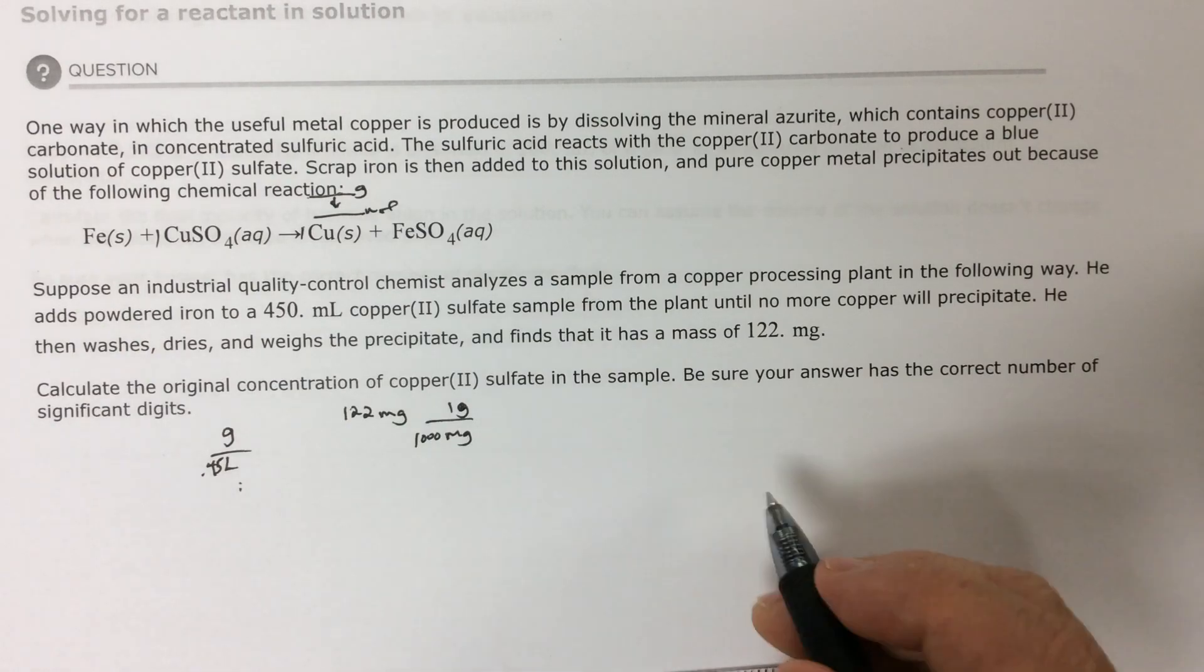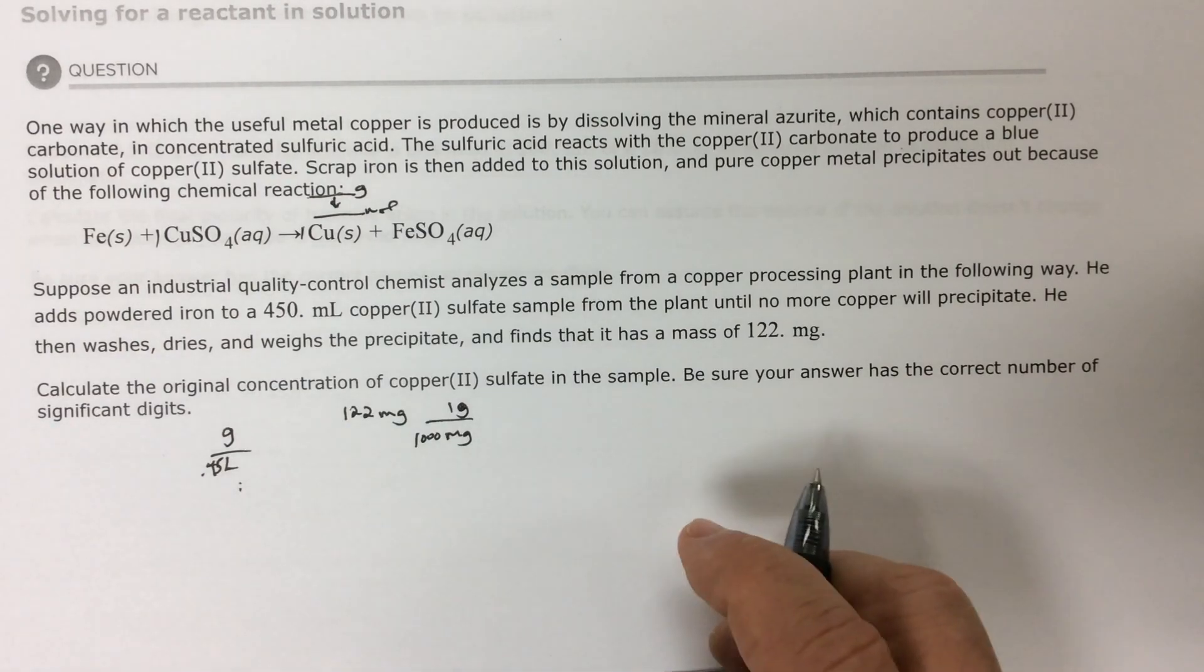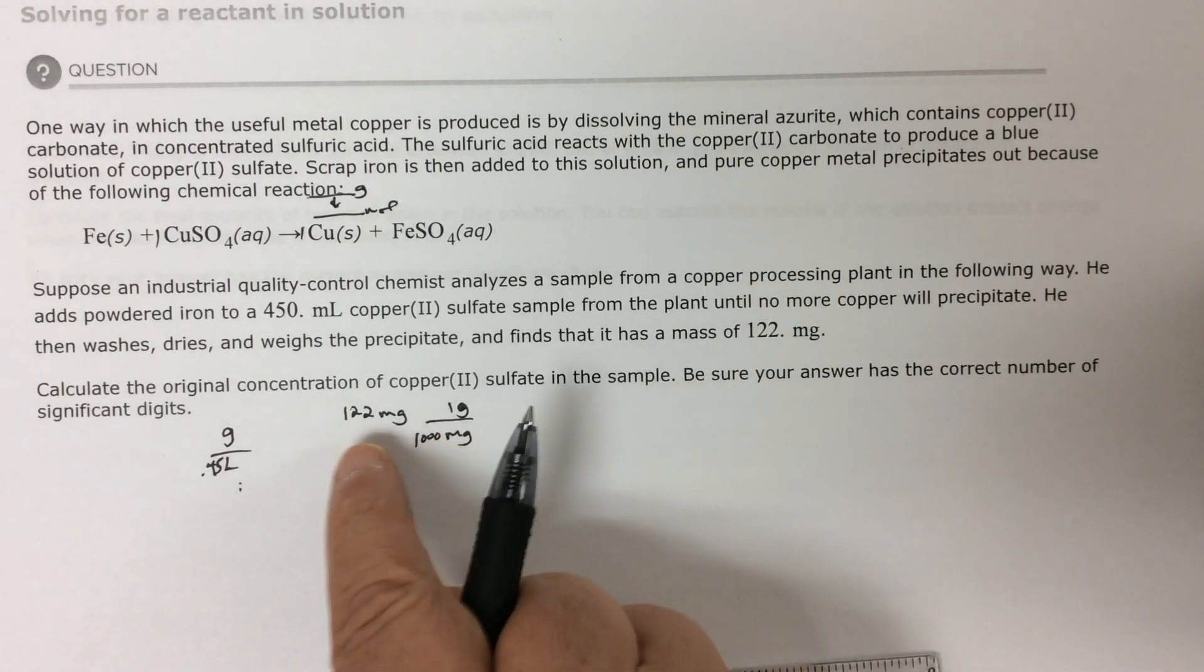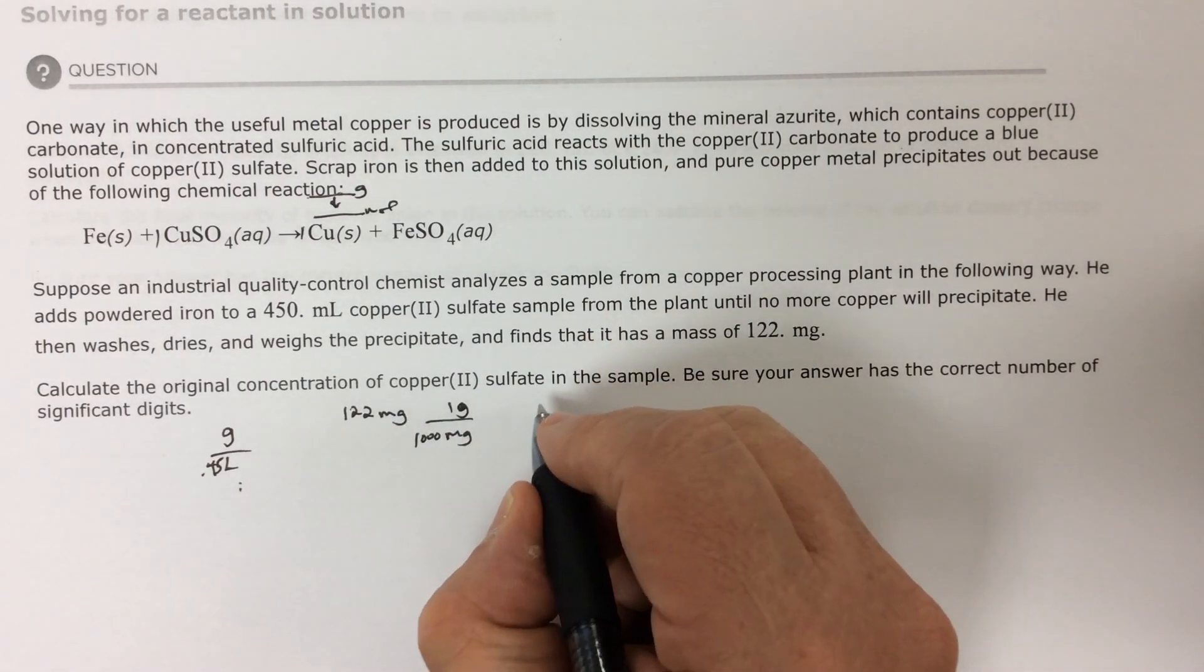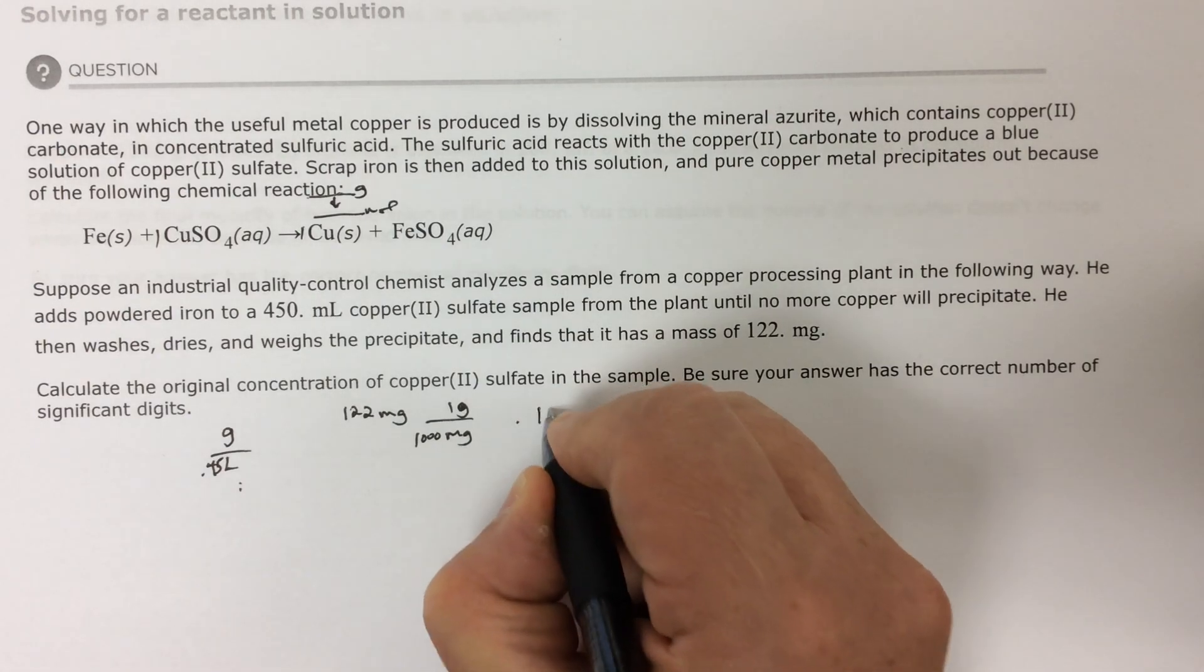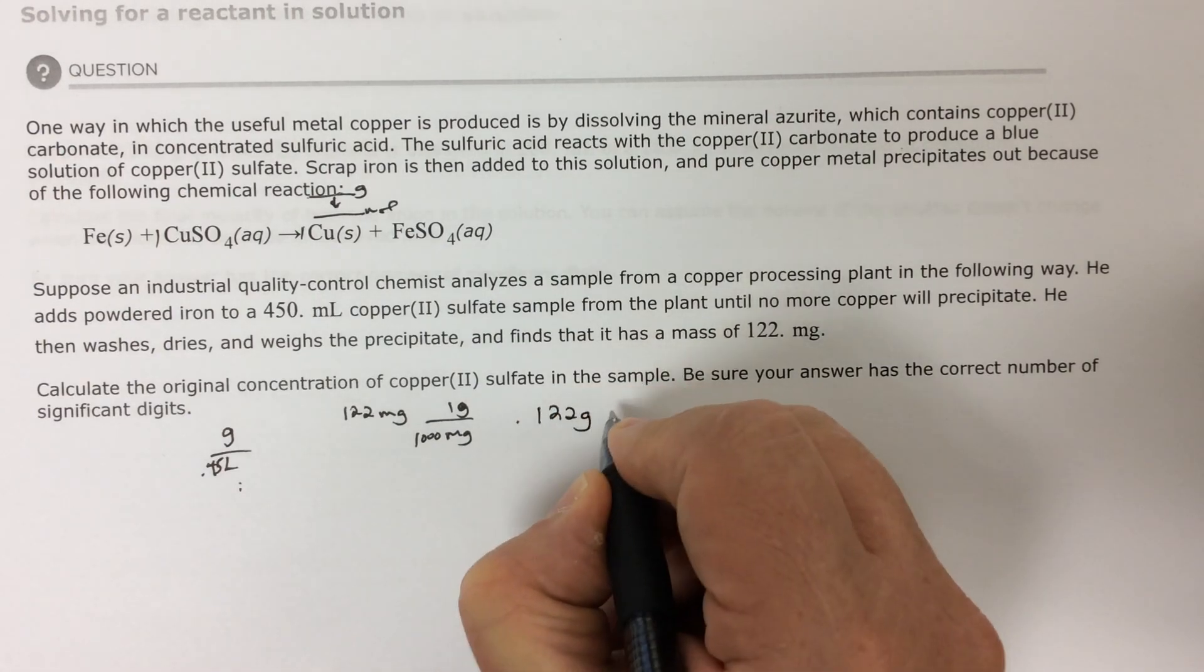Okay. So I want grams so that I can go through the periodic table. So I'm dividing by a thousand. I've got the decimal point after the two. That means I'm going to have 0.122 grams of copper.